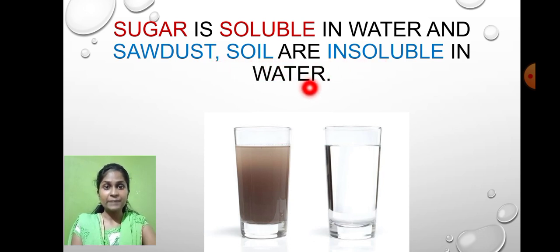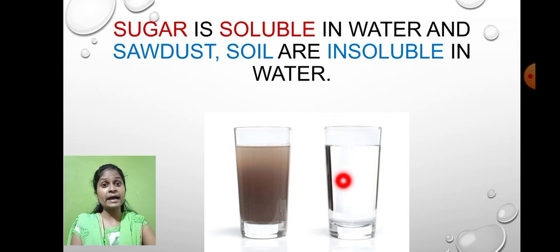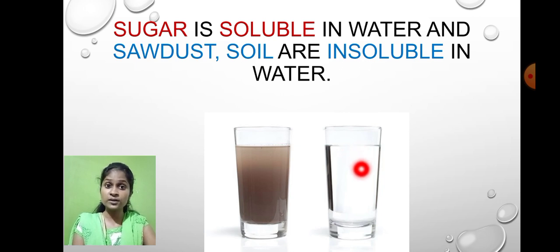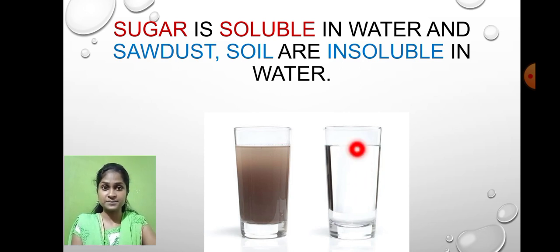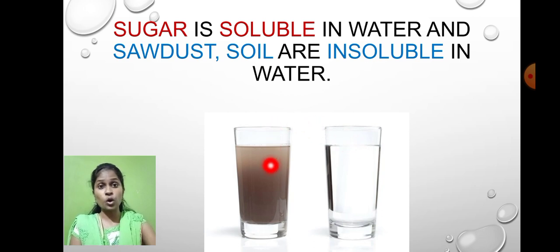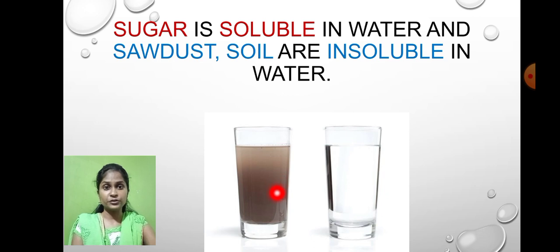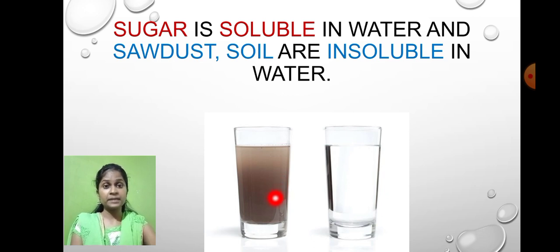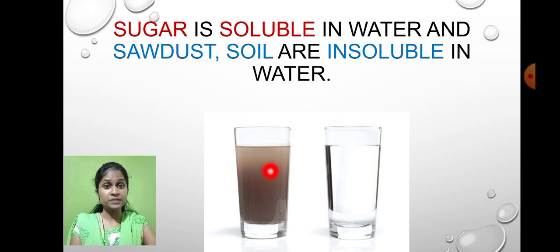The conclusion of this experiment is that sugar is soluble in water, while sawdust and soil are insoluble in water. When we add sugar or salt, it dissolves completely and we get a transparent solution. When we add soil or sawdust, we get a muddy solution.